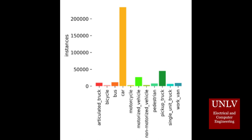Unlike other datasets, the MioVision TCD uses solely traffic camera data, which provides a unique perspective with respect to the angle at which it identifies vehicles. In addition, the MioVision TCD allows us to identify different types of vehicles at this angle, including articulated trucks, bicycles, buses, cars, motorcycles, pedestrians, pickup trucks, single unit trucks, and work vans.